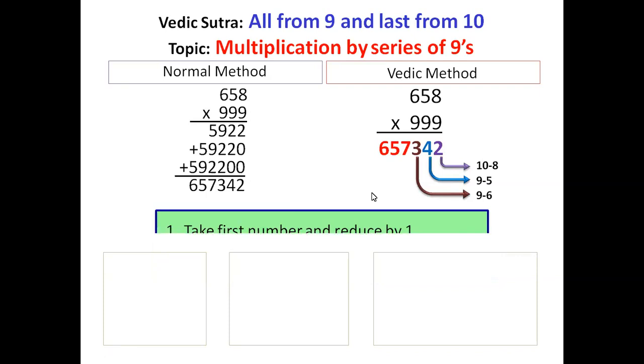Next step. Let's take more examples. 74 multiplied by 99. First step, 1 less. That is 74 minus 1 is 73.